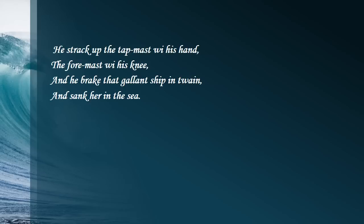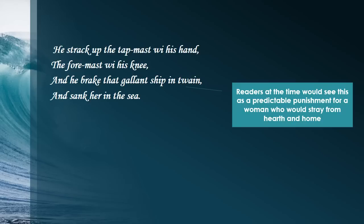And finally, the tragedy comes to pass. He struck the topmost mast with his hand and the foremast with his knee — so he must be pretty huge, like a big scary monster. With one flick of his hand he can get rid of the mast, and one move of his knee the other. He breaks that gallant ship in twain and sinks her in the sea. The readers at the time would see this as a predictable punishment for a woman who would not stay home with her children and her husband.